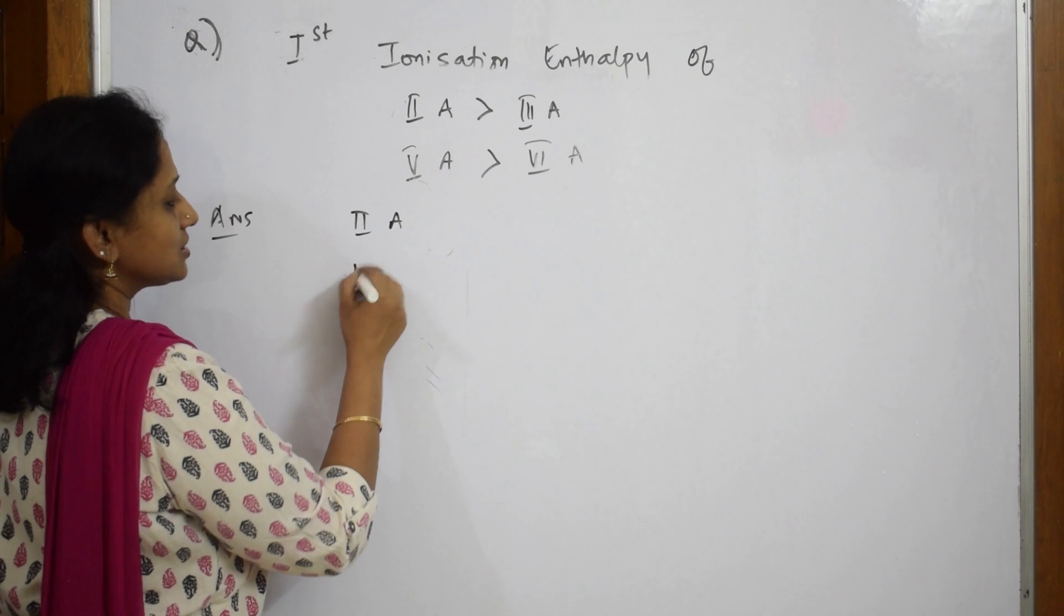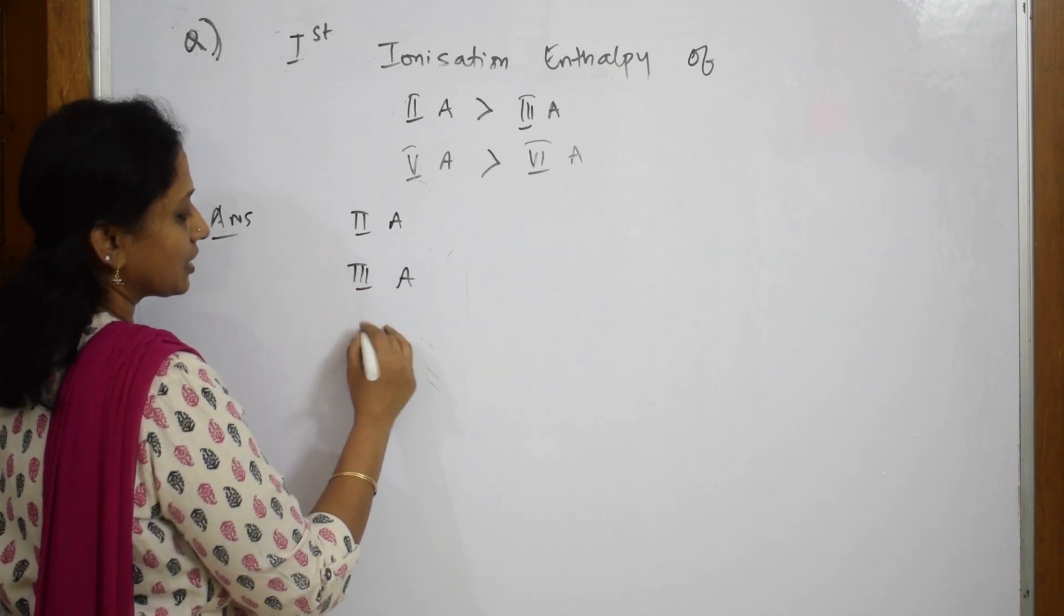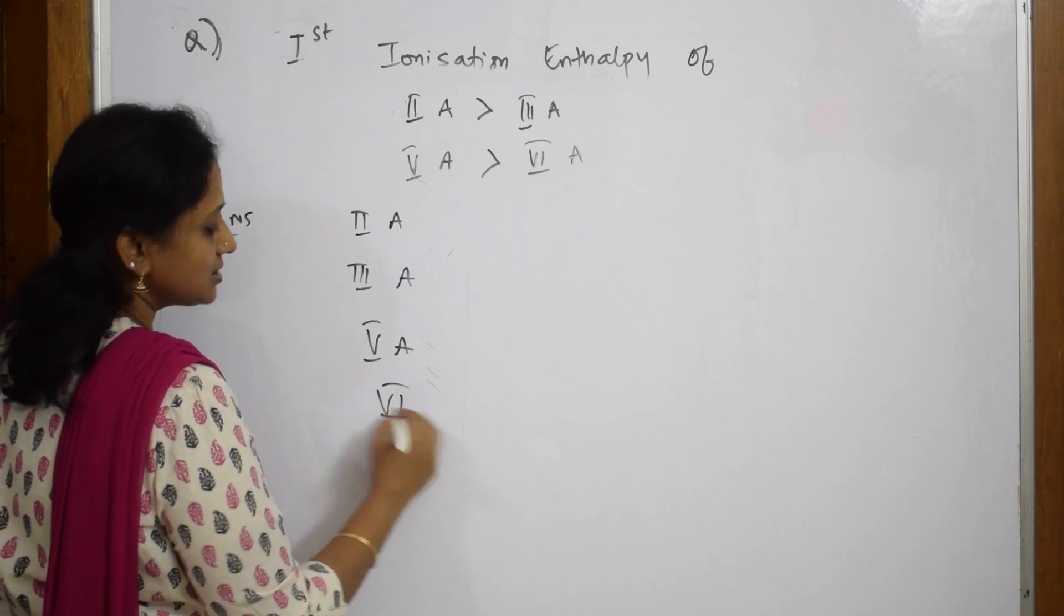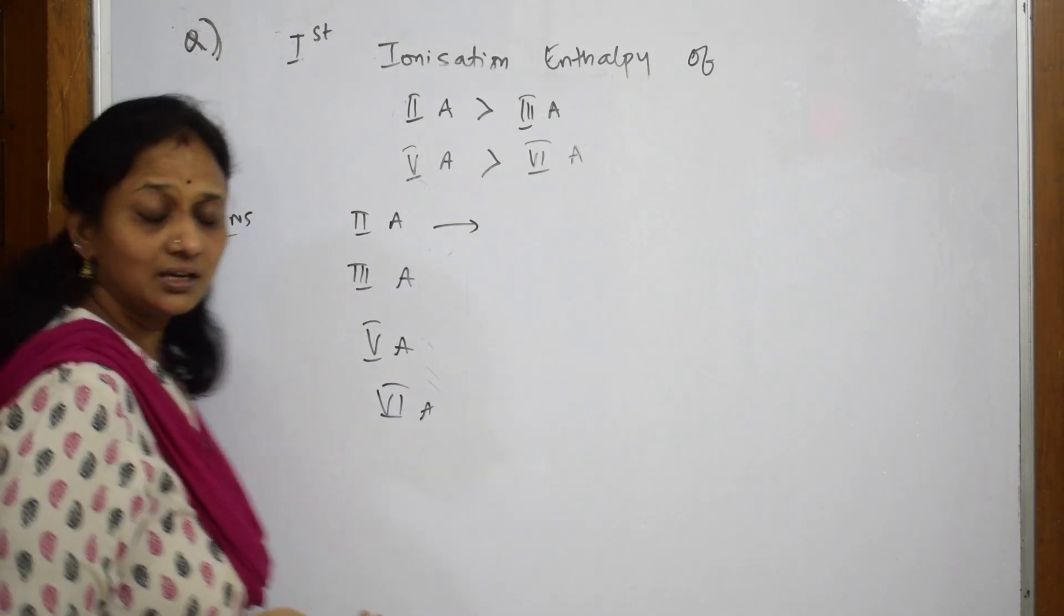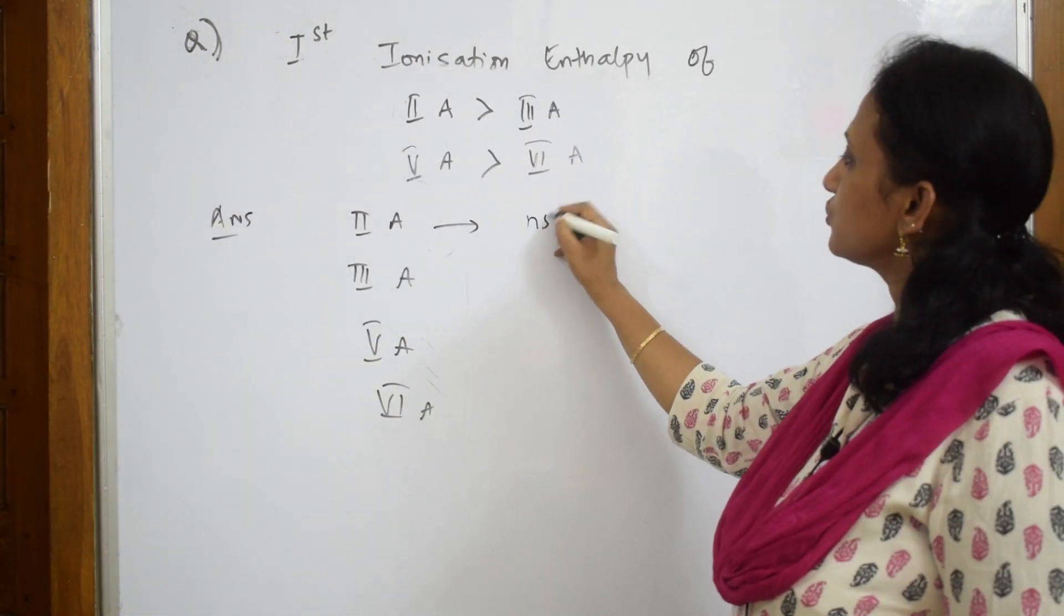When I have to compare, what is 2a basically? Let us write the configuration. This is 3a, 5a, and 6a. 2a configuration - the general configuration is ns2.